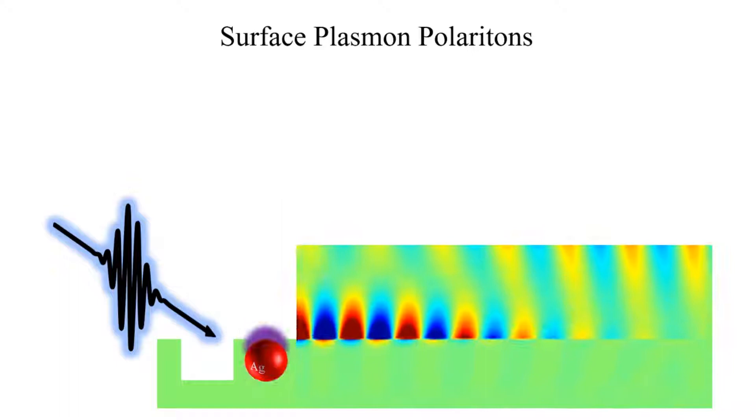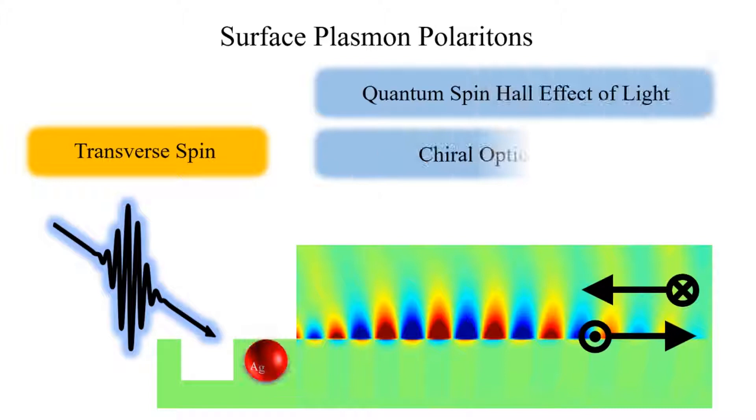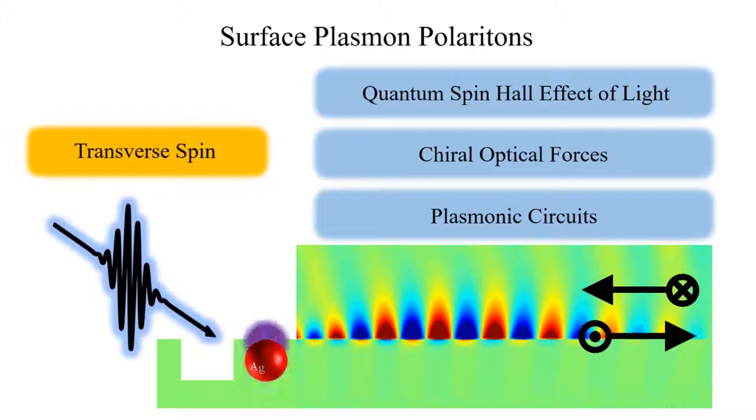Such propagating mode carries transverse spin orthogonal to the direction of propagation, meaning that counter-propagating plasmon waves have opposite spin directions, which is a manifestation of quantum spin-Hall effect of light. Therefore, SPPs can be utilized to achieve chiral optical forces technique and spin-orbit coupling assisted plasmonic circuits.